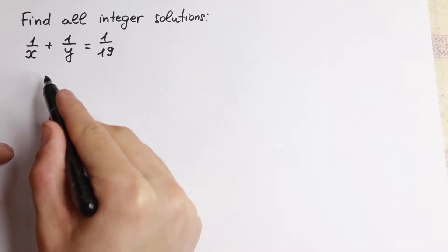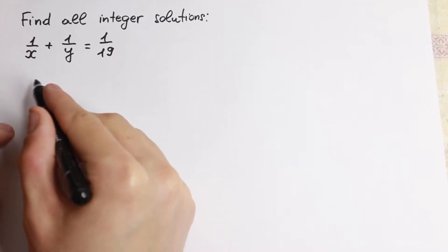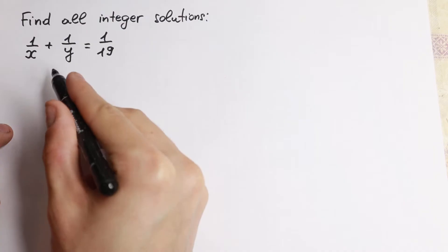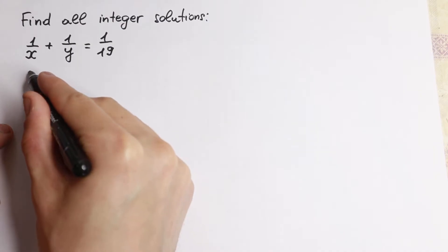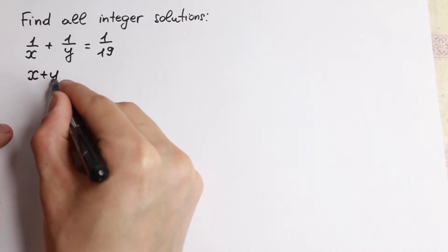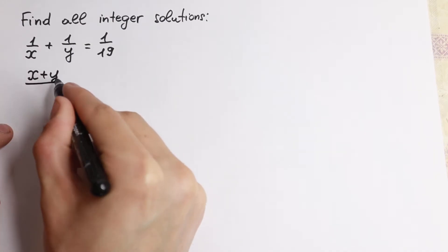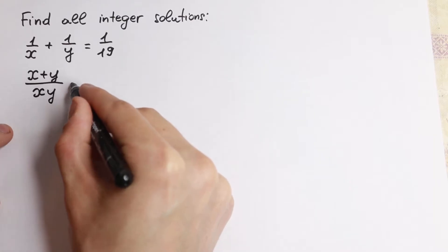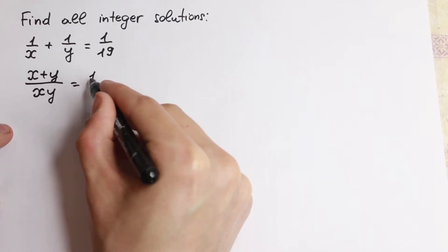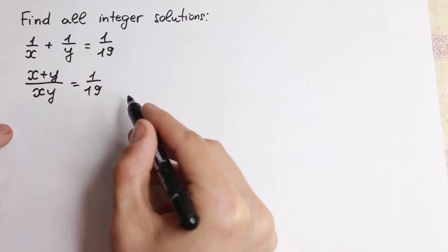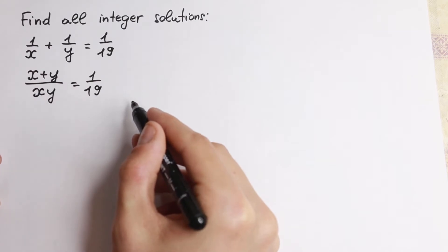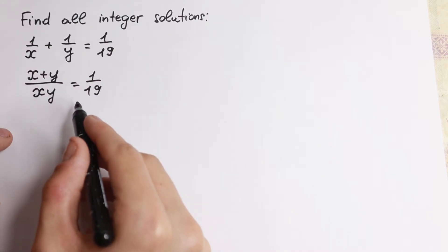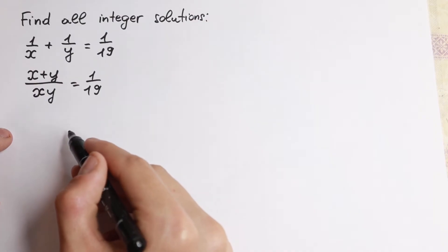We need to simplify the left hand side a little bit, so let's find a common denominator and add these two elements. We will have x plus y in our numerator and xy in our denominator, equal to 1 over 19. The next step we're going to do is cross-multiplying.